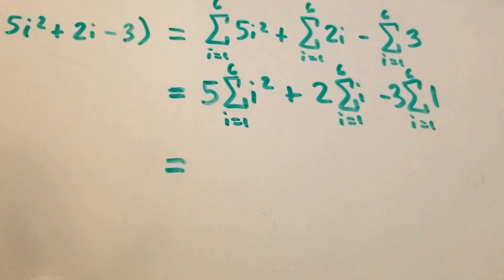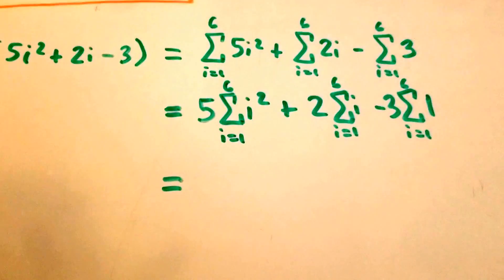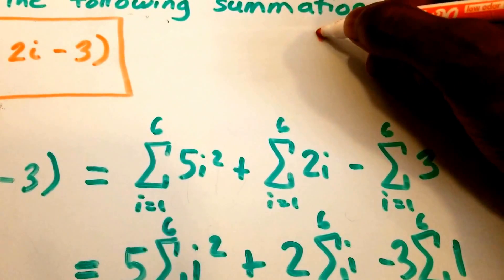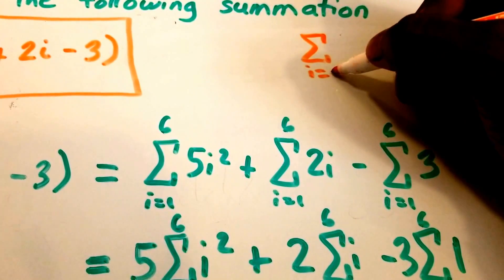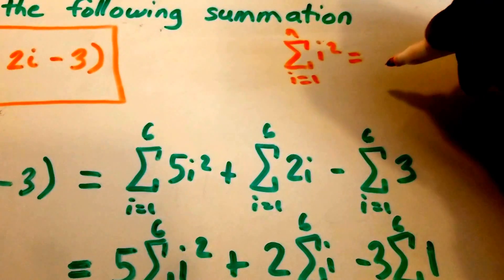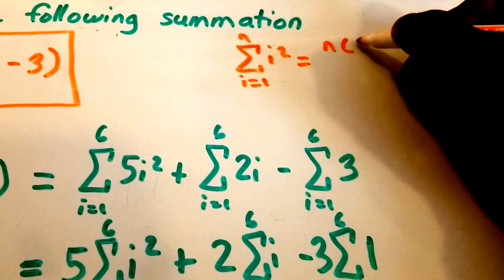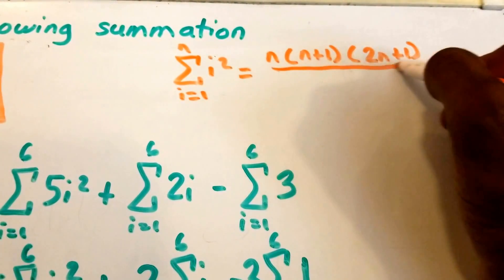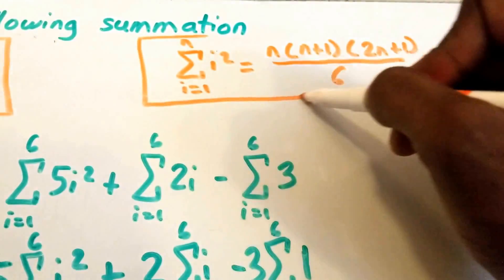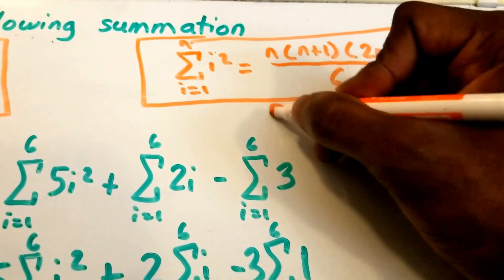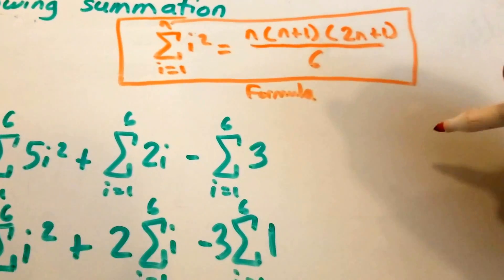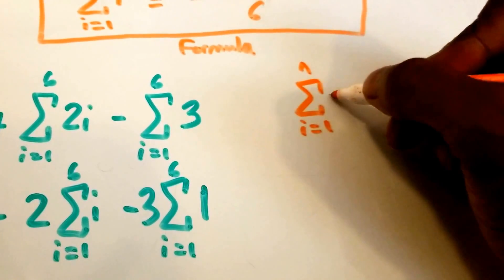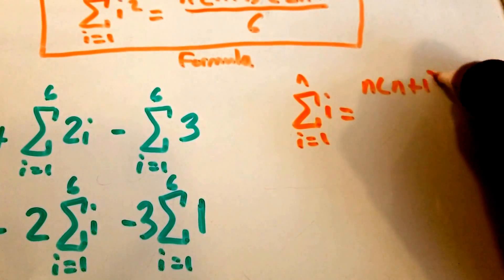Now we can use a formula to solve this. Formula 1: the summation from i equals 1 to n of i squared equals n times (n plus 1) times (2n plus 1) all over 6. Formula 2: the summation from i equals 1 to n of i equals n times (n plus 1) divided by 2.